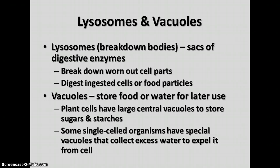Lysosomes and vacuoles are two other things often found in cells, particularly animal cells. Lysosomes are also called breakdown bodies — the prefix "lyso" comes from the word meaning breaking down, and "some" means body. These are basically sacks of digestive enzymes, very useful for recycling within the cell. They break down worn-out cell parts and digest ingested cells or food particles into nutrients the cell can use. Vacuoles are like storage closets — they store food or water for later use. Plant cells have large central vacuoles that store sugars and starches, which is very characteristic of plant cell structure.